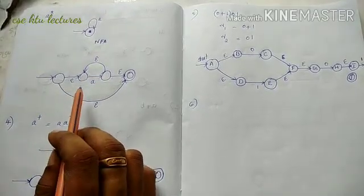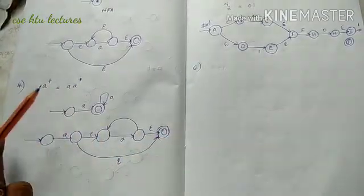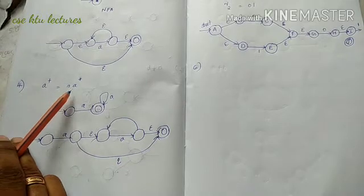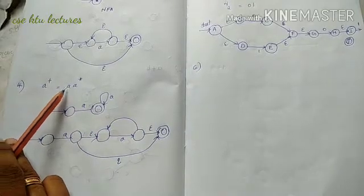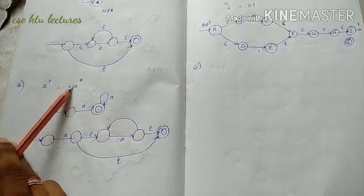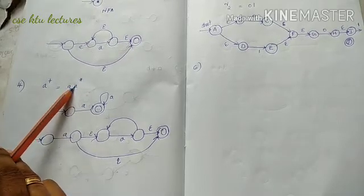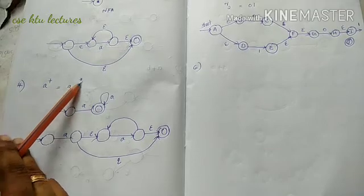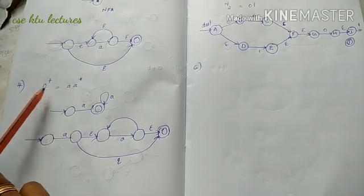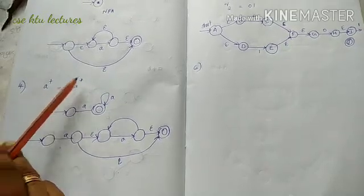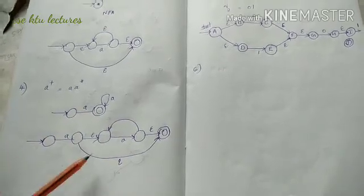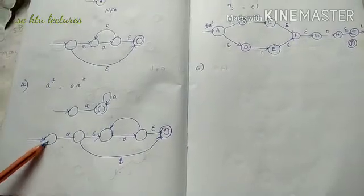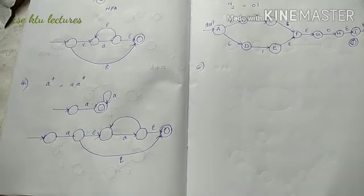Now we will apply A-plus. A-plus means A concatenated with A-star. A-plus means there is no empty string — the minimum is one A. In A-star we apply a minimum of one occurrence. So A-plus is equivalent to A·A-star. The first state transitions to A, then into A-star.